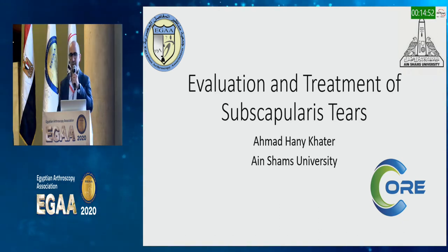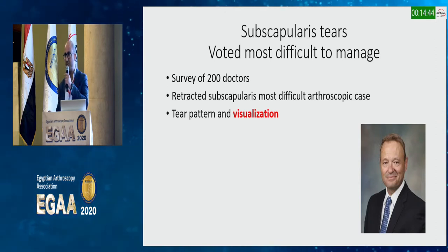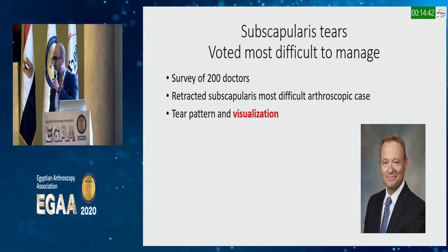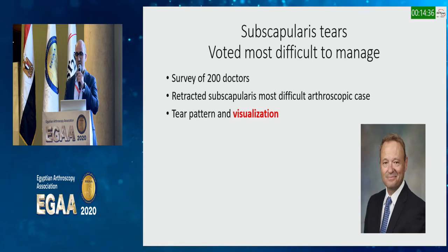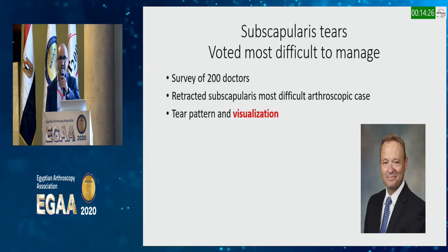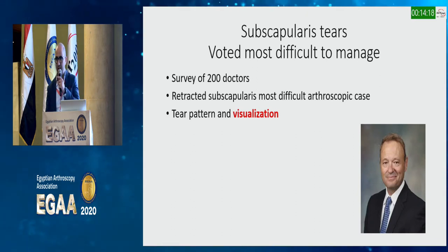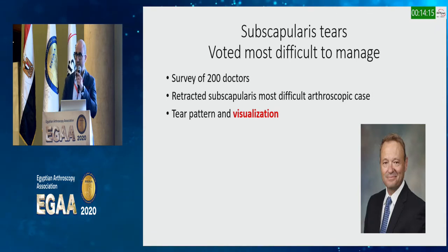We're talking about subscapularis tears. Up till now, subscap tears still strike fear in the hearts of our colleagues. A survey done by Dr. John Tokish among 200 doctors showed they still feel that the subscap is the most difficult arthroscopic case in shoulder surgery. The difficulty is usually in tear pattern and visualization of the tear.